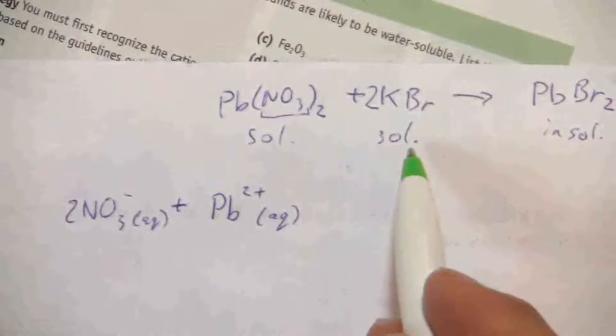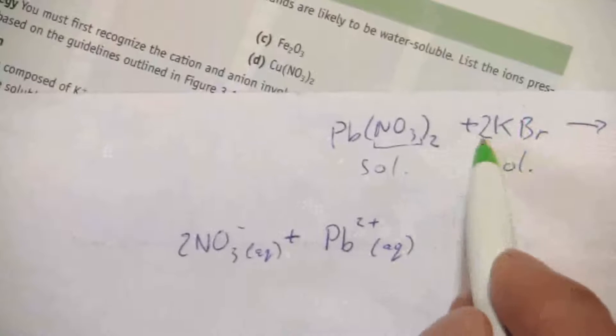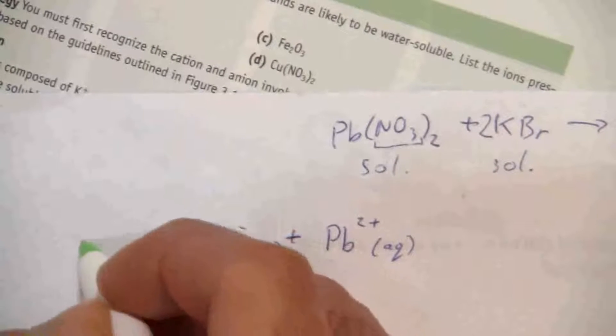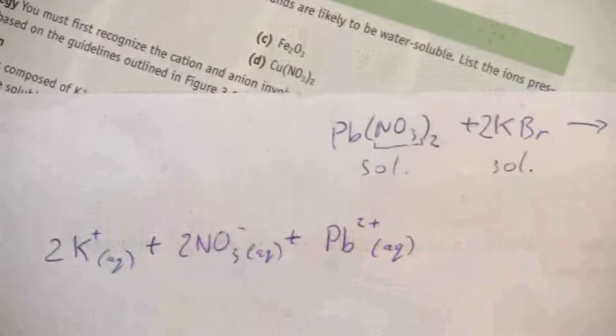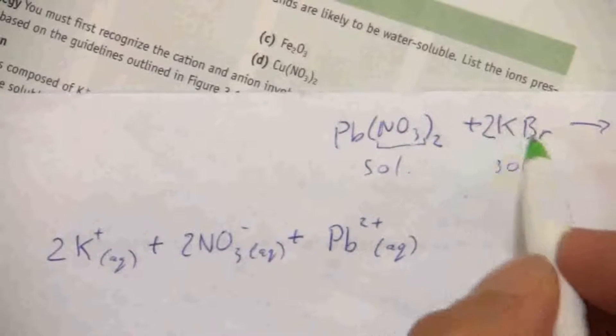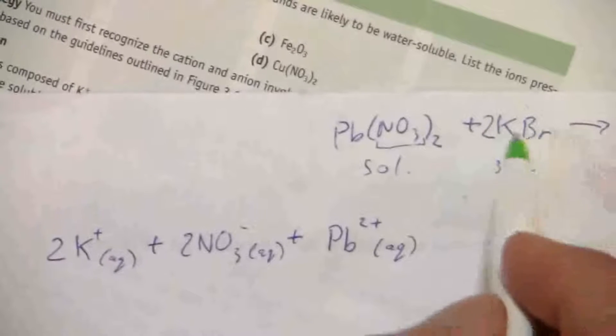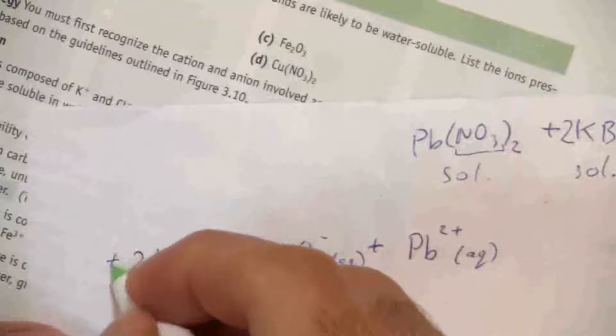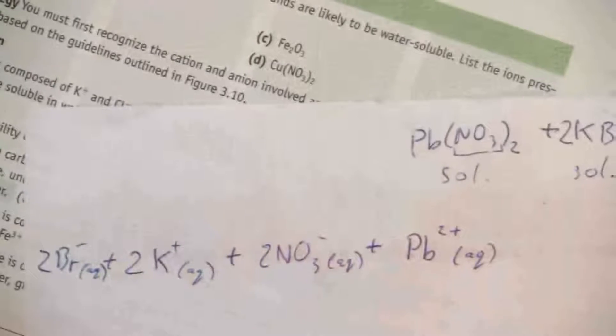Potassium bromide is also soluble. So when that breaks apart, I'll have two potassium ions. So it'll look like this, two potassium ions and two bromide ions. That two applies to both because it's saying I have two KBr formula units. That includes the bromine there. So I'll also have two Br minus aqueous.